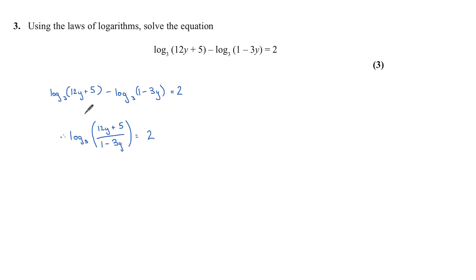And so I can write this. Now our log rules state that this base here, so 3 to the power 2 is equal to this 12y plus 5 over 1 minus 3y. So I can write 12y plus 5 over 1 minus 3y equal to 3 to the power 2.